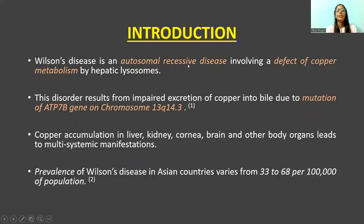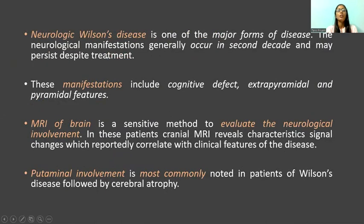Wilson's disease is an autosomal recessive disease involving a defect of copper metabolism due to mutation of ATP7B gene on chromosome 13q14.3. Neurologic Wilson's disease is one of the major forms of disease and the neurologic manifestations include cognitive defect, extrapyramidal and pyramidal features. MRI of brain is a sensitive method to evaluate the neurological involvement in these patients.